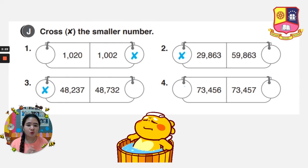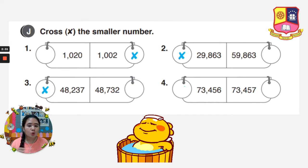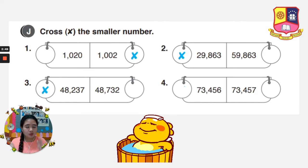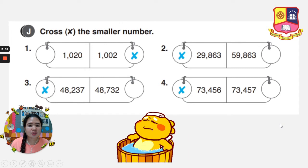Last number — let's go to number 4. We have 73,456 and 73,457. Let's compare: 7 and 7, the same; 3 and 3, the same; 4 and 4, the same; 5 and 5, the same; 6 and 7 — which one is smaller? That is 6, so the answer will be 73,456. That is how to pinpoint the smaller number — just compare and look for the number of digits.